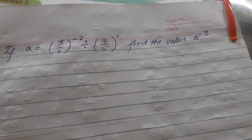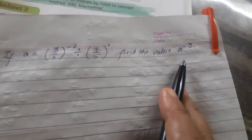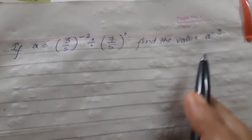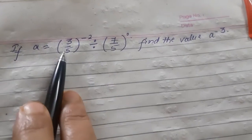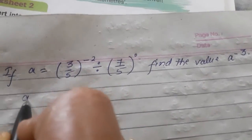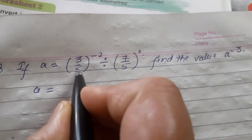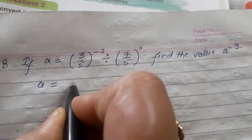Now kids, let us have this question in which the value of a is given and we have to find out the value of a to the power minus 3. But you can see the value of a is not given in its simplest form, so we will simplify this expression (3/5)^-2 first.